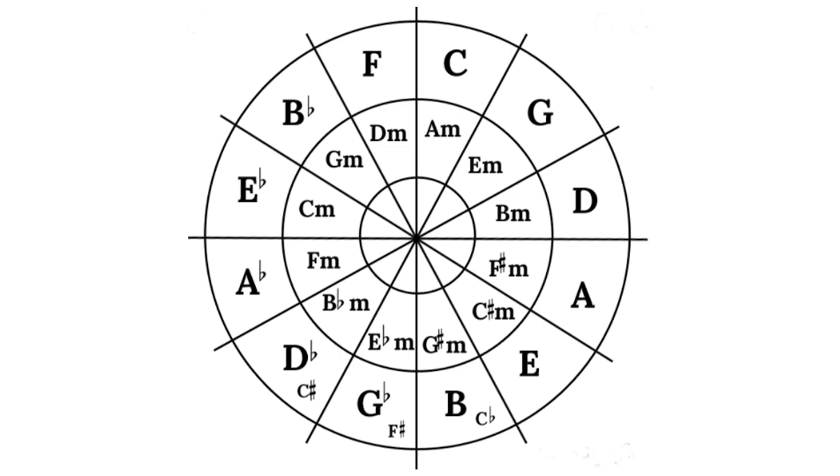For the purposes of this video we'll stop at B which is at the bottom of the circle. If you carry around the circle you'll eventually start having two letters in the same segment, a sharp letter and a flat letter. In these cases composers can choose whether they want to write in the sharp or flat key.